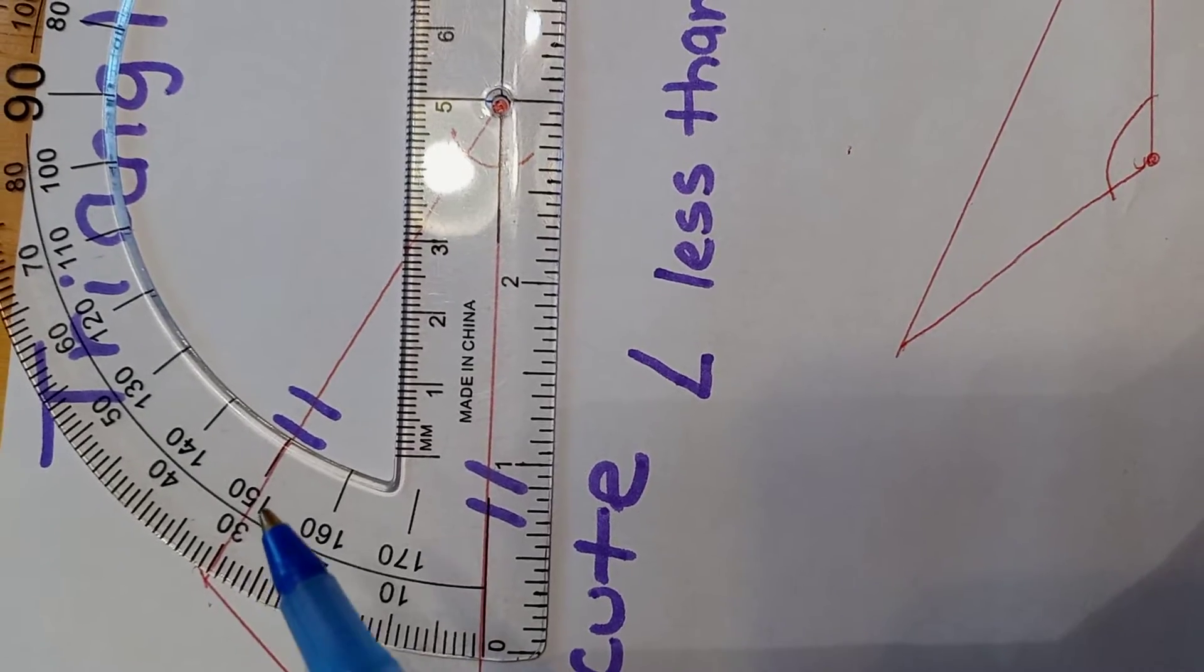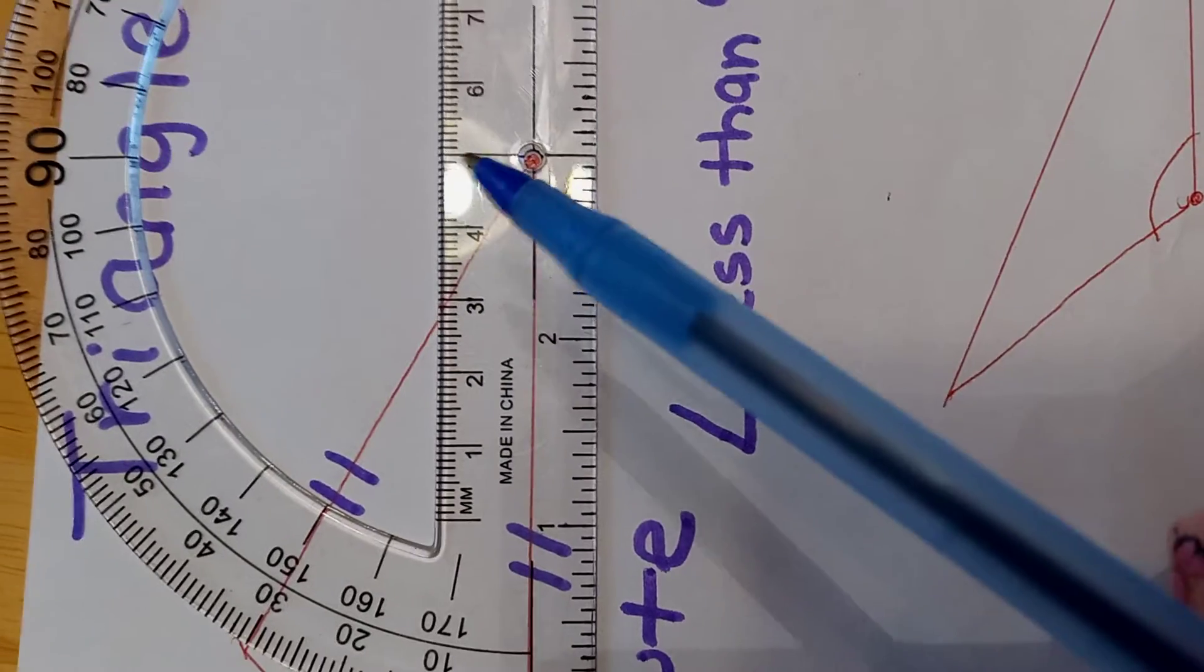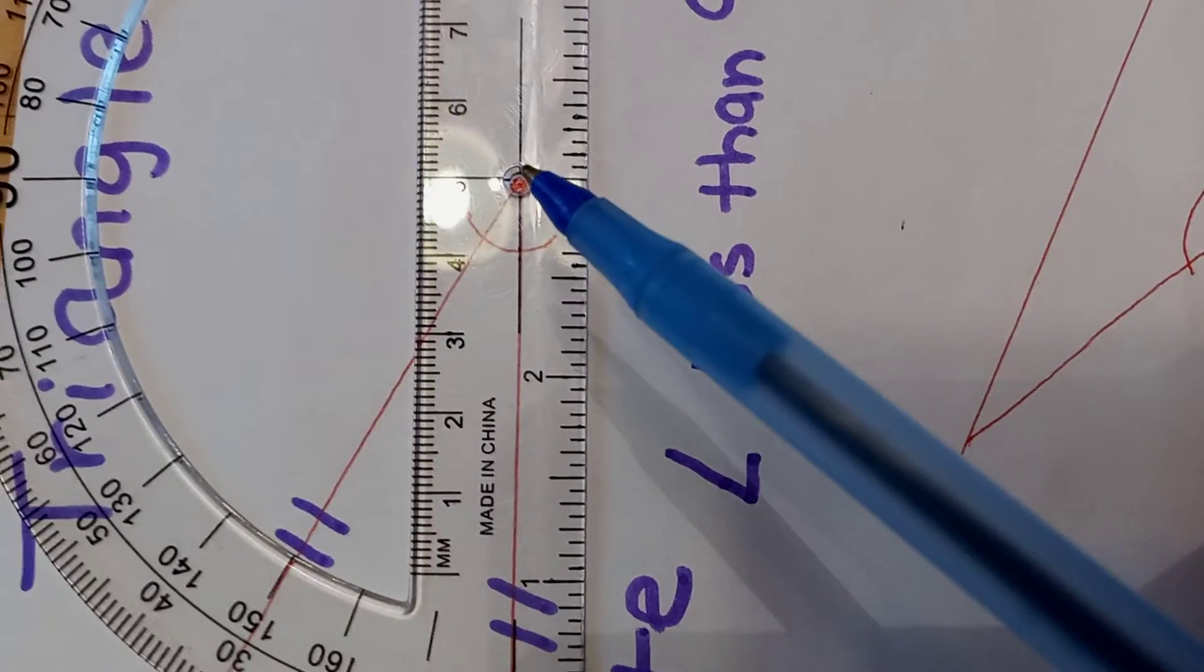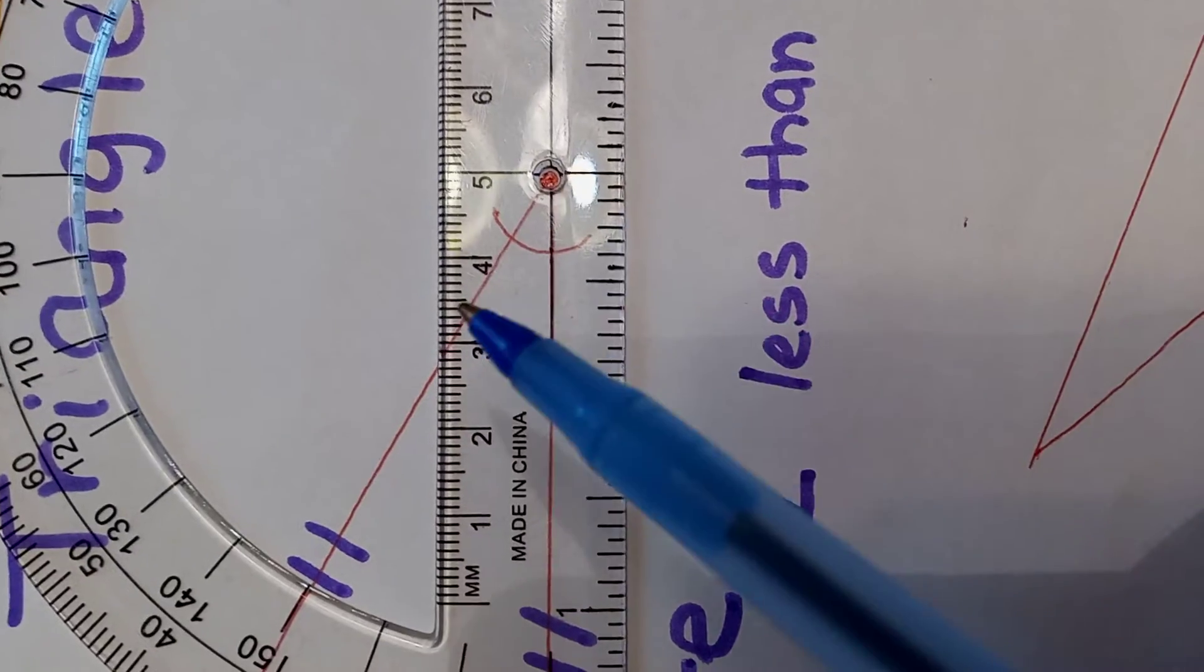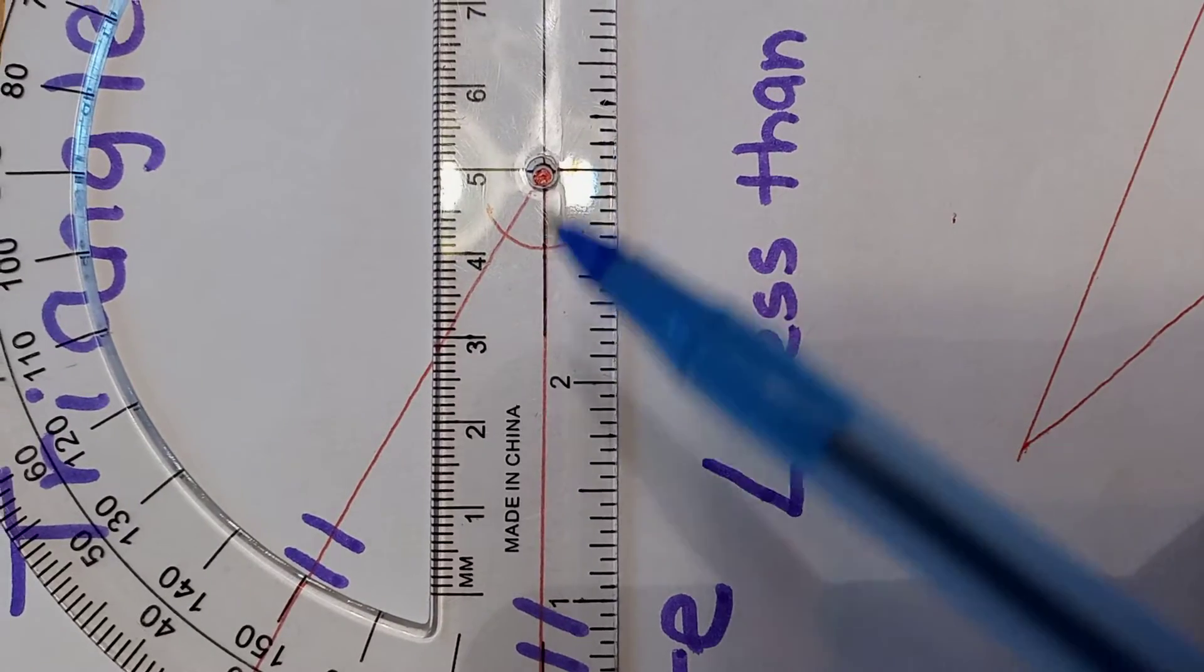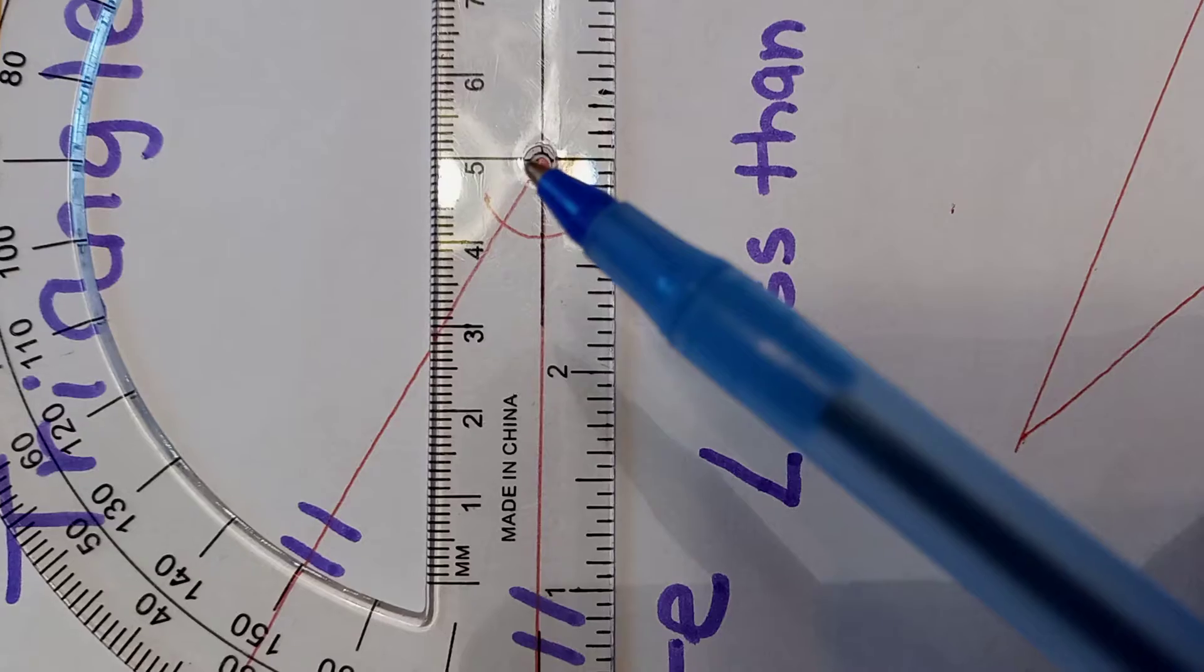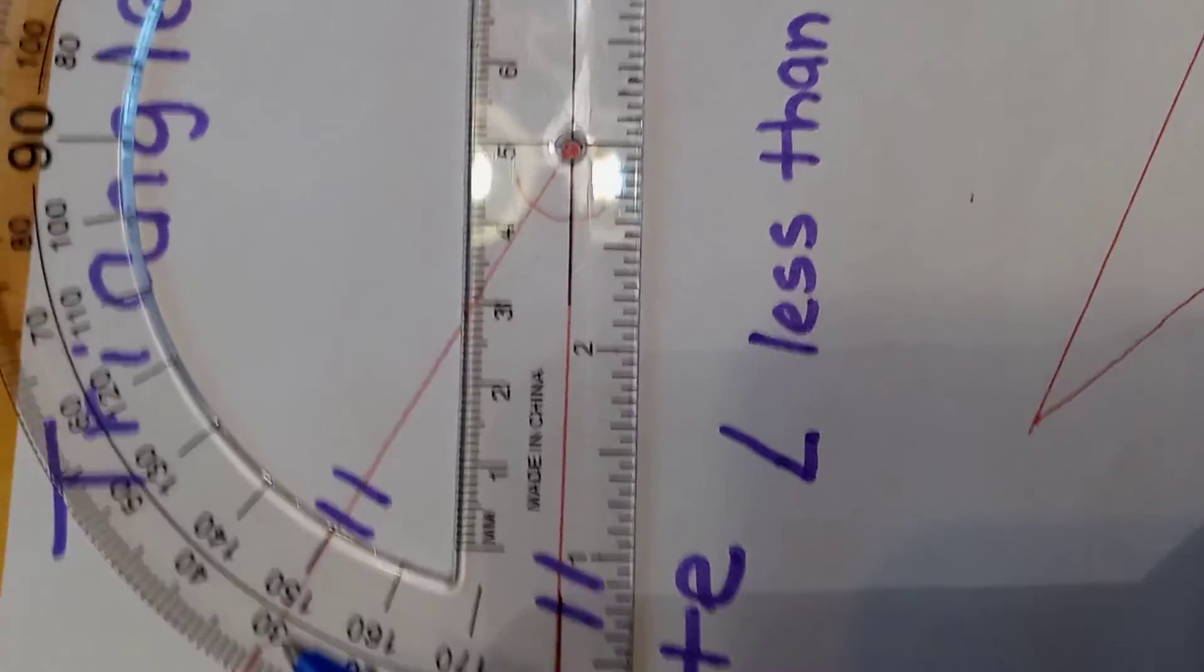You see that it is in between this L. So if it's in between this L, it means it's less than 90 degrees. In that case, this is a 30 degree angle.